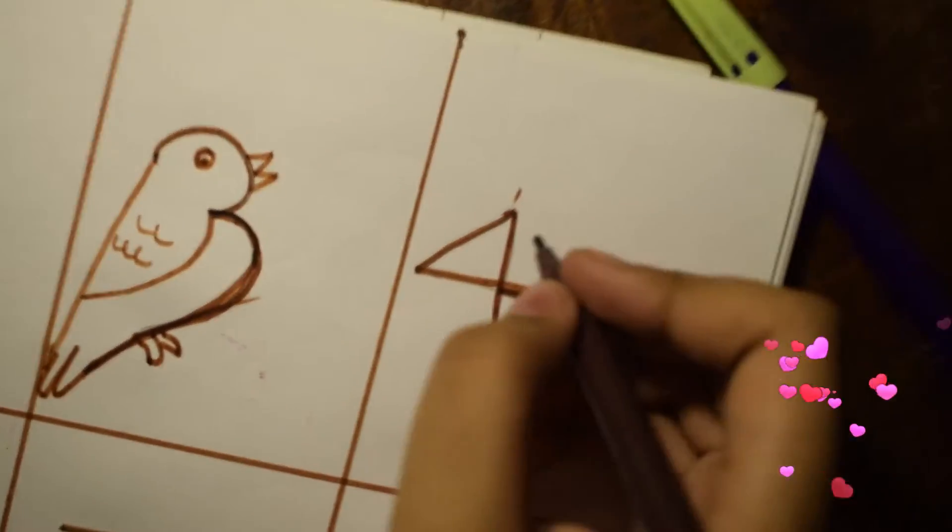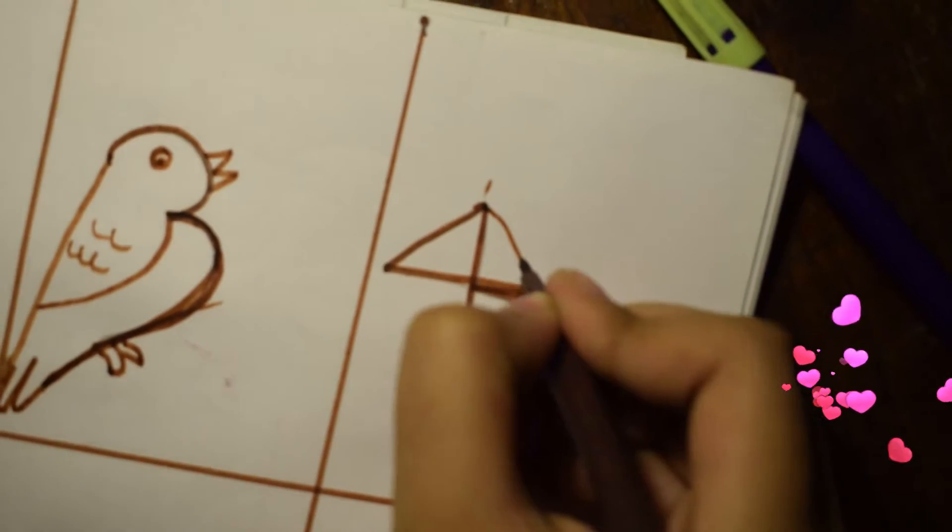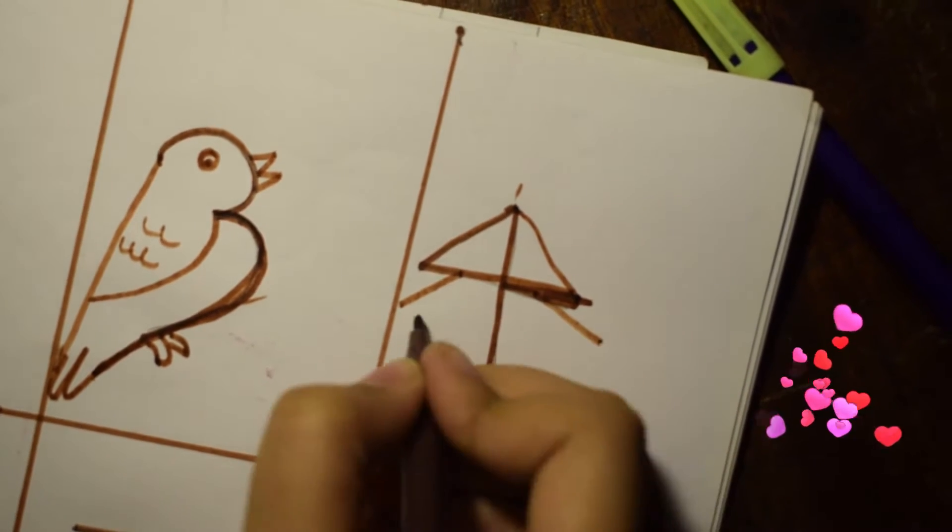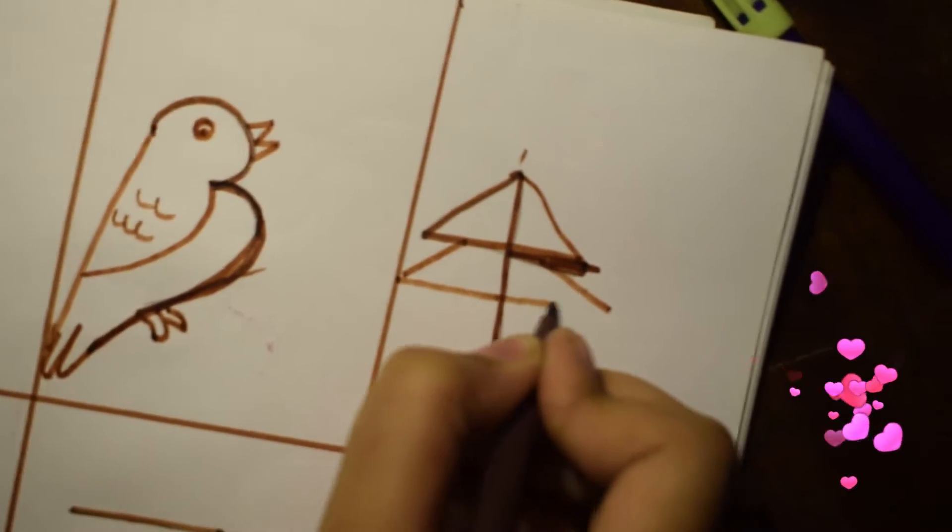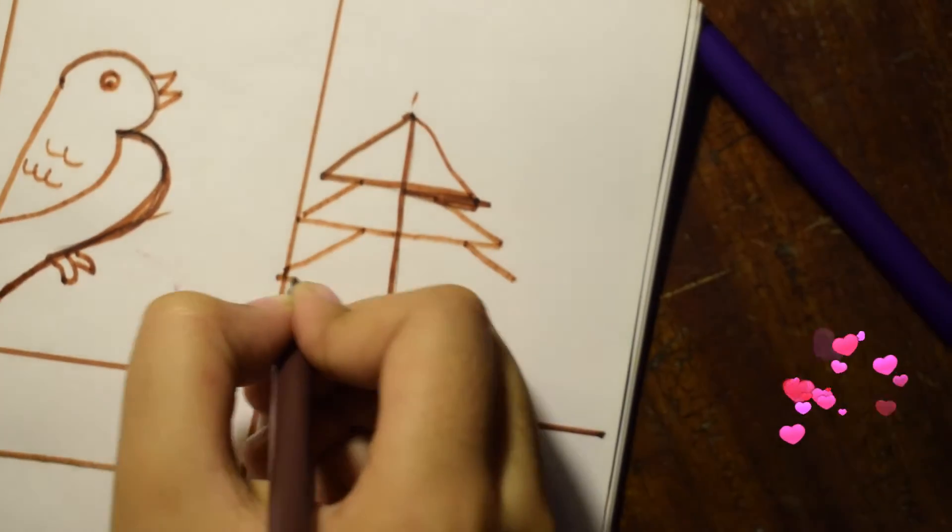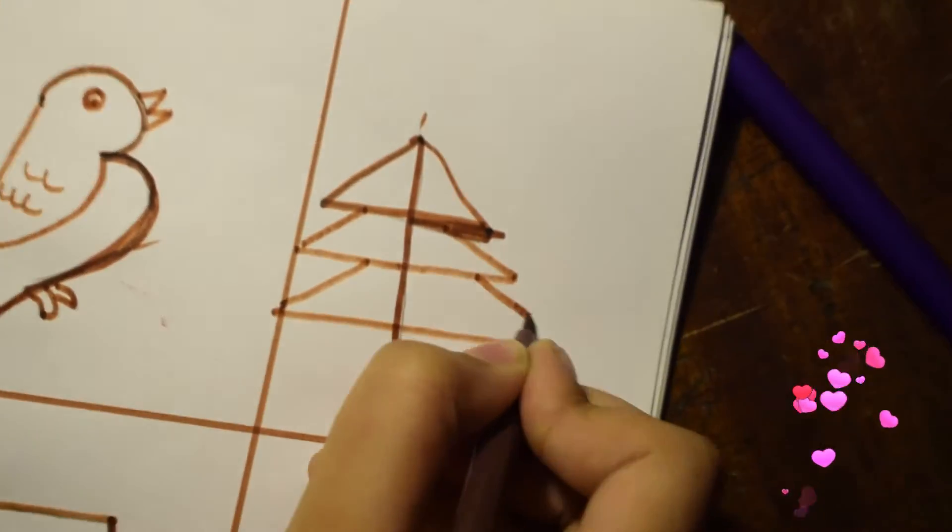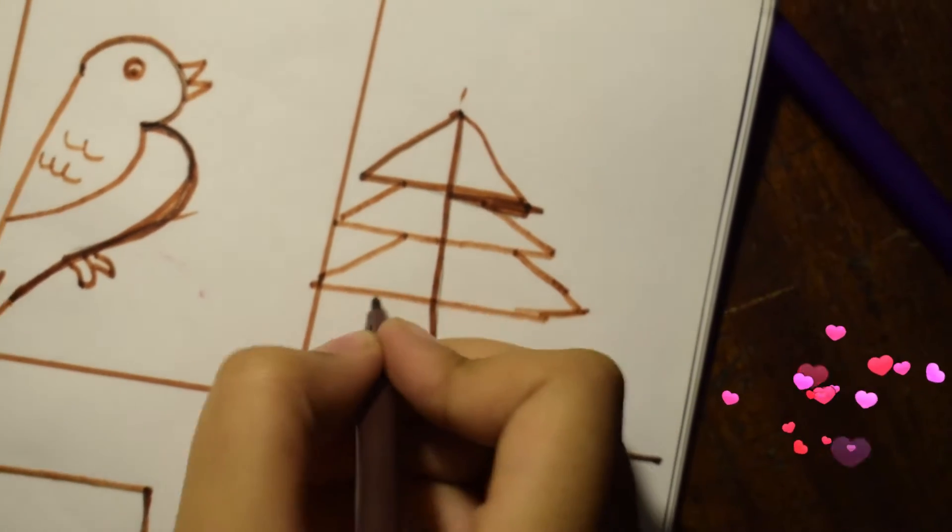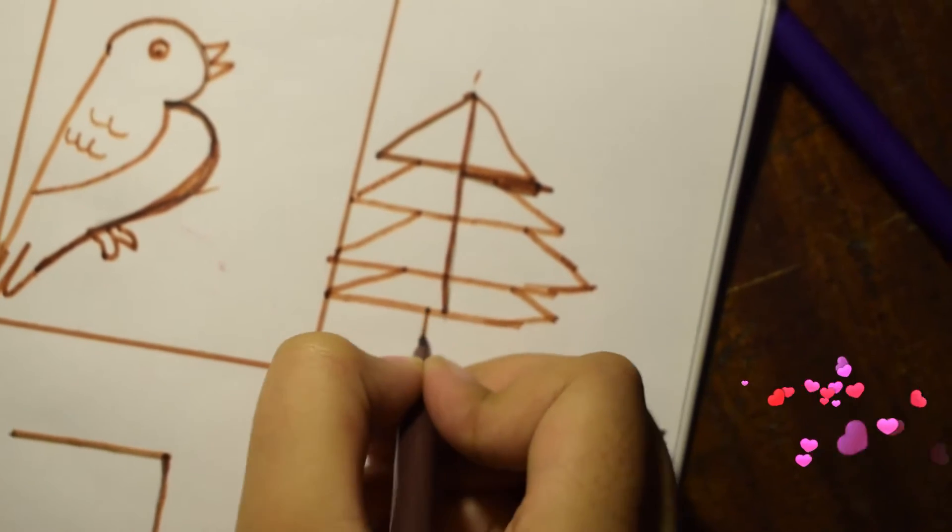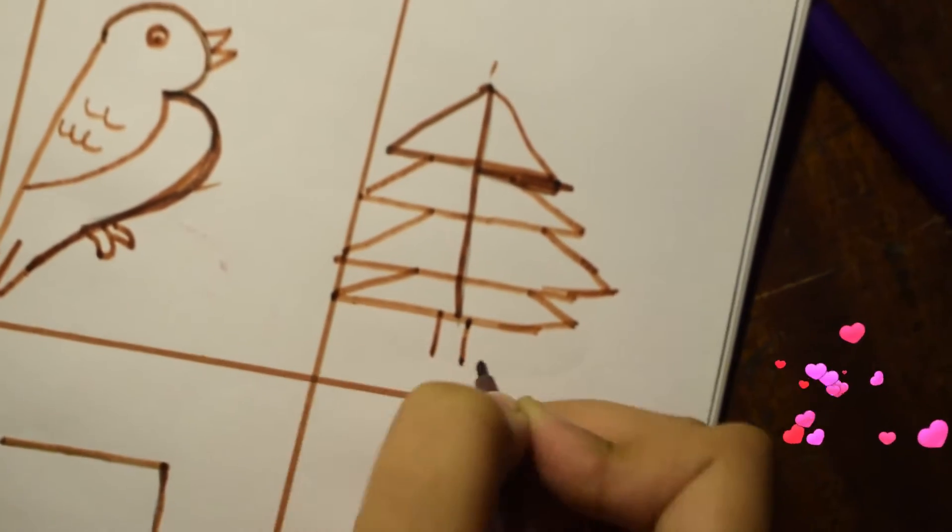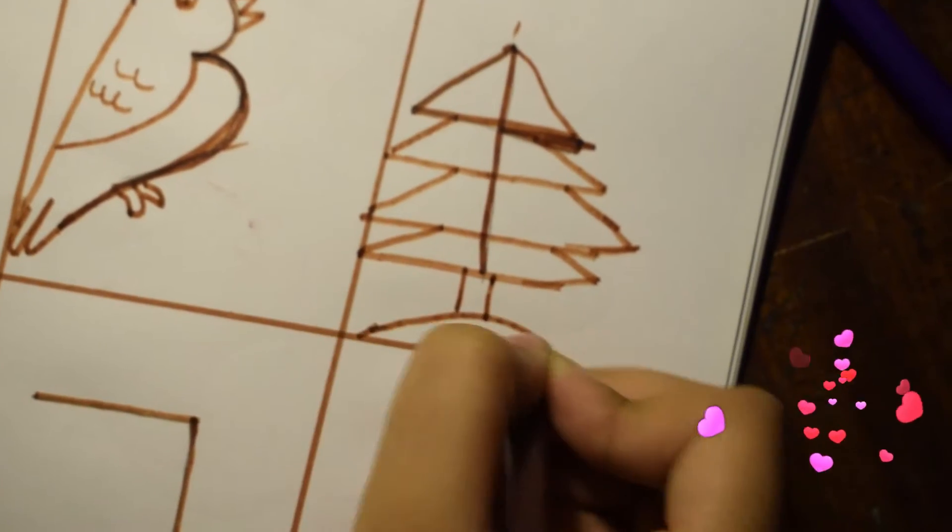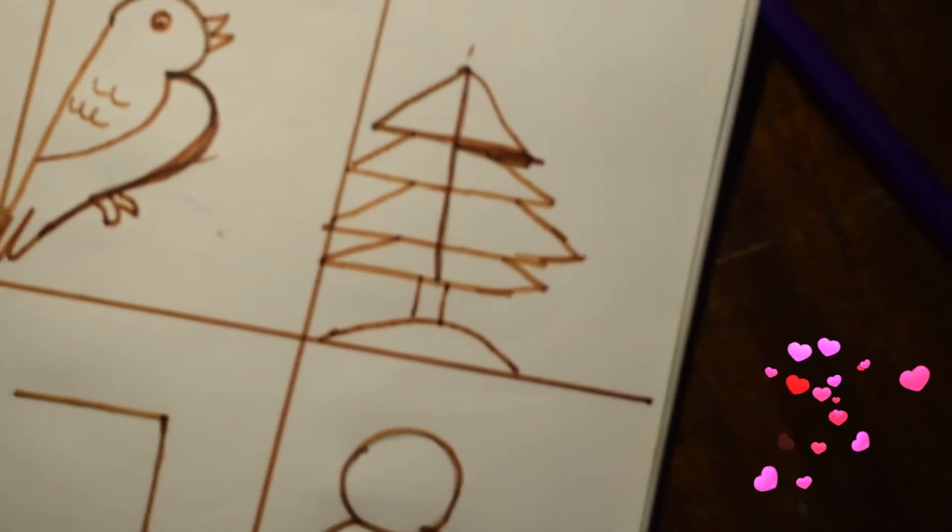Next is four. We'll make it a tree. Yes. Green. And trunk. A small heap. Yay. Wow. A Christmas tree.